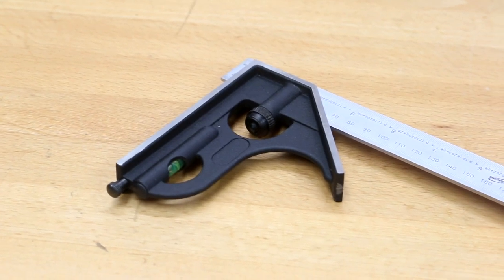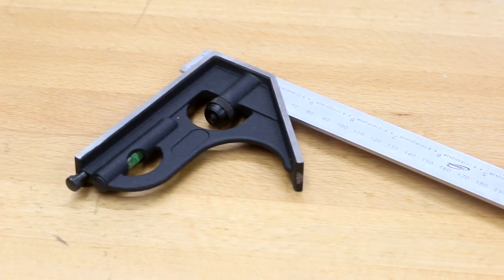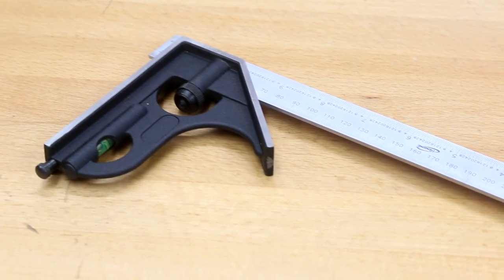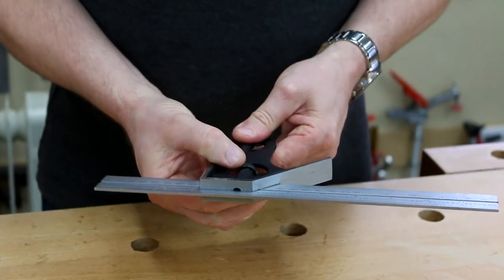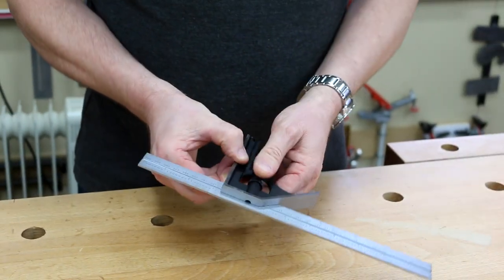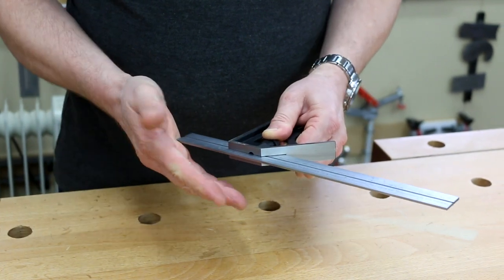The main body of the square is cast steel with a level set into it. We have a nice knurled screw fitting - if we release this we can slide the rule in and out.